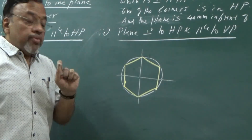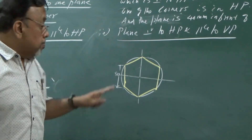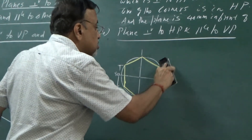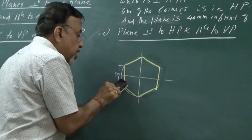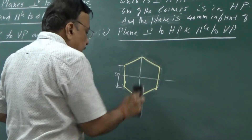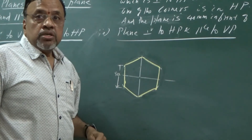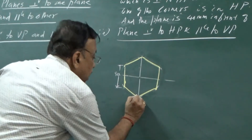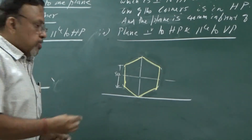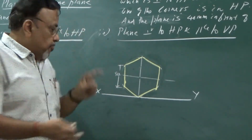This is the hexagon with all sides of 50 mm. The construction lines should be kept as light as possible since you will not erase them. Now, since one corner is in HP, I draw the XY line touching that corner. It is better to draw the hexagon first, then draw the XY line to avoid confusion.